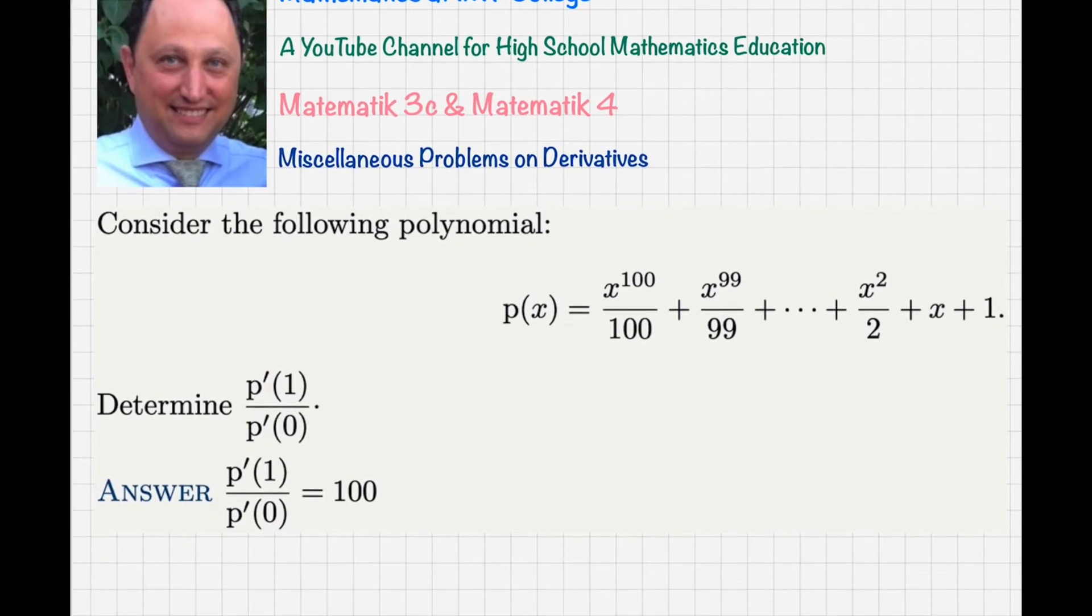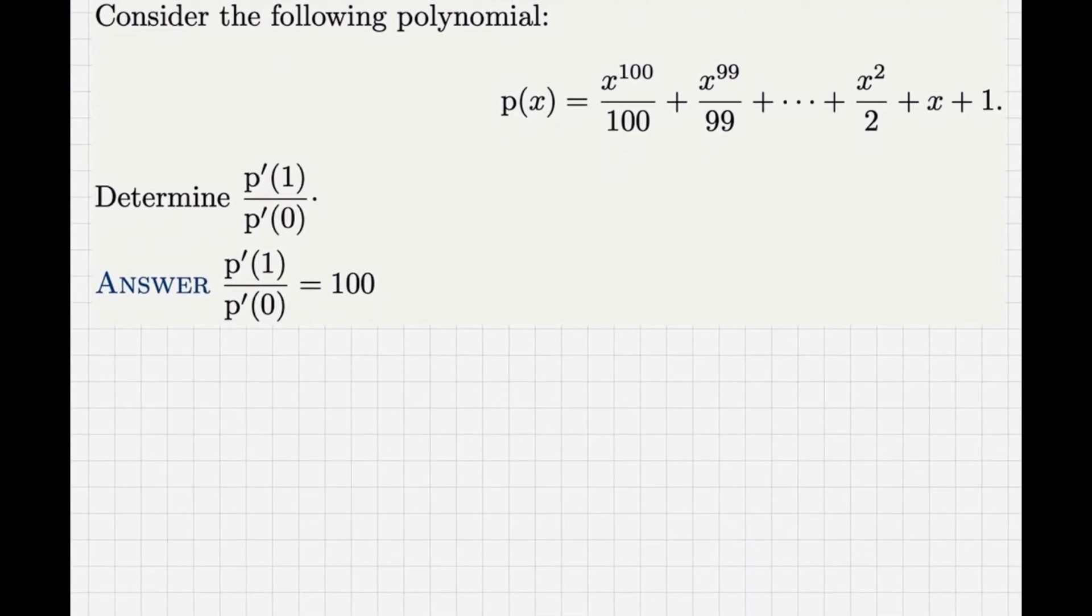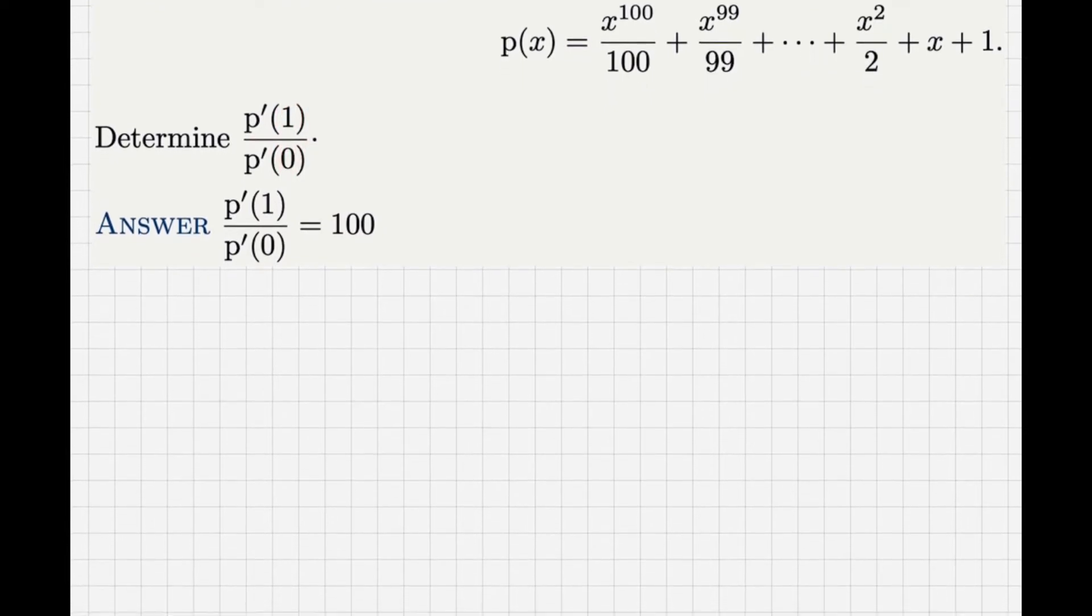Now let us solve the problem. The most natural way to calculate this fraction is to calculate the numerator and the denominator individually and then divide them together. If I want to calculate the derivative of any function at a given number, the first thing I have to do is calculate the derivative of the function itself using differentiation rules. Then after that, I replace the x in the derivative by that particular value. For the numerator it is 1, for the denominator it is 0. But anyway, I have to calculate p prime of x first.